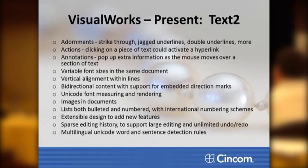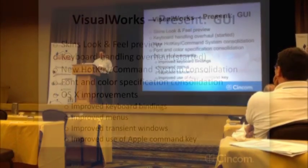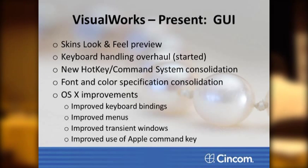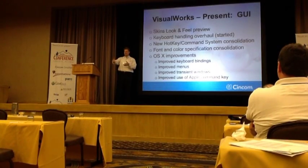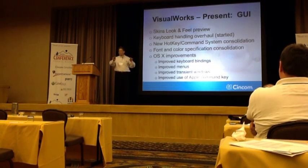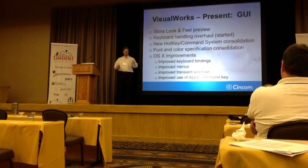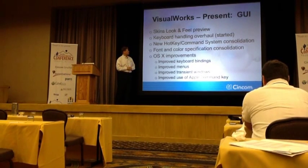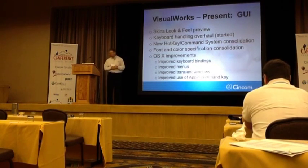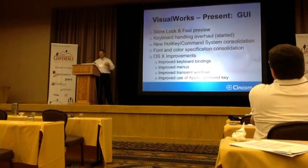Some things TEXT2 can do that the current text cannot — and Skins. Skins is something I think is really neat: it helps solve the age-old problem of painted widgets vs. emulated widgets. What Skins does is try to give you the best of both worlds — a customizable widget that you can make sing, dance, do anything you want, yet the rendering is actually done by the host operating system. On Windows and Mac, the rendering is truly done by the operating system. Keyboard handling is also being overhauled, with a new hotkey system, color spectrum consolidation, and a list of improvements for various operating systems.